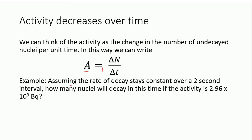Here we have another example question. Assuming the rate of decay stays constant over a two-second interval, how many nuclei will decay in this time if the activity is 2.96 times 10 to the 3 becquerels. What we have to do here is rearrange this equation. If we want how many nuclei will actually decay in this time, we rearrange it to delta N, which is effectively the change in the number of nuclei. How many nuclei will decay will be equal to A delta T.